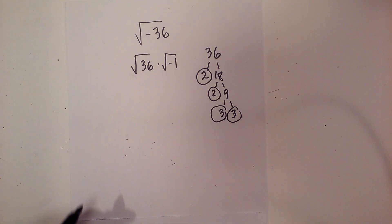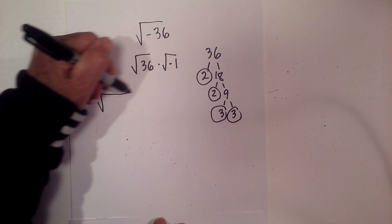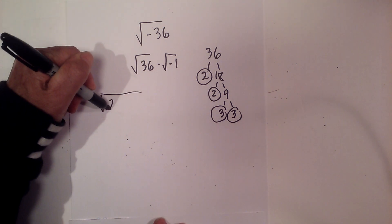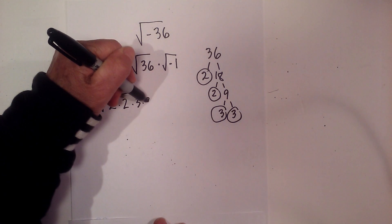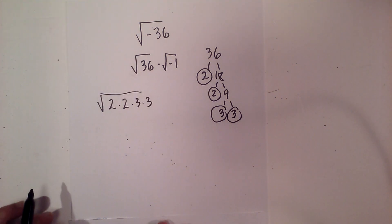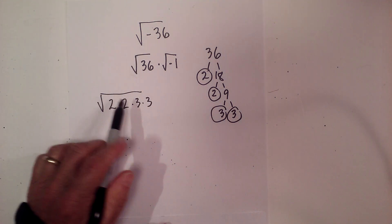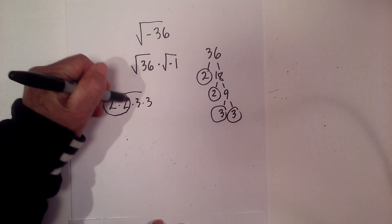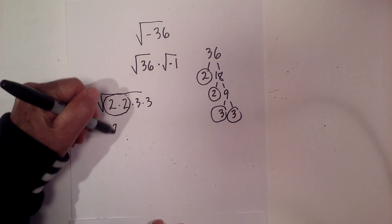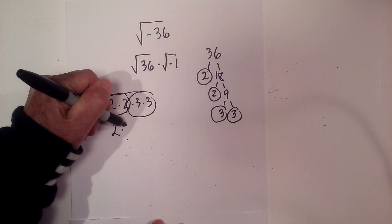And 3 times 3 equals 9, so I'm now down to prime numbers. I can rewrite the square root of 36 as 2 times 2 times 3 times 3. We know that we can take pairs out from under the radical sign — a pair of 2s gives us 2, and a pair of 3s gives us 3, so 2 times 3 is 6.